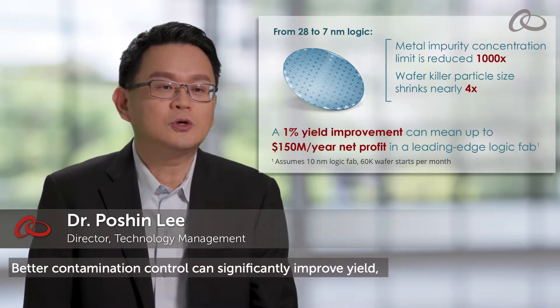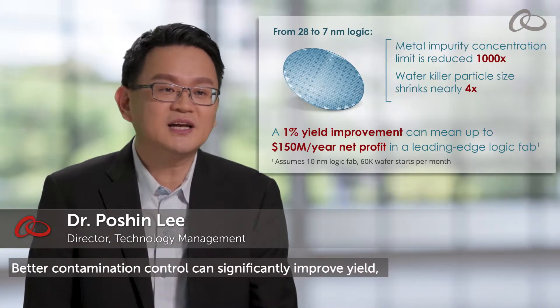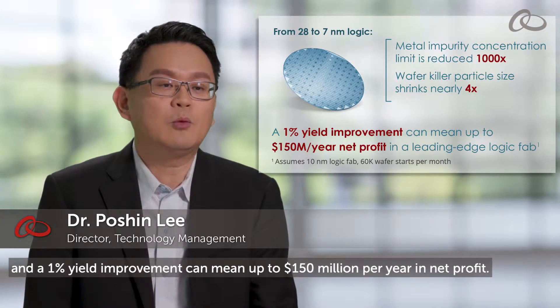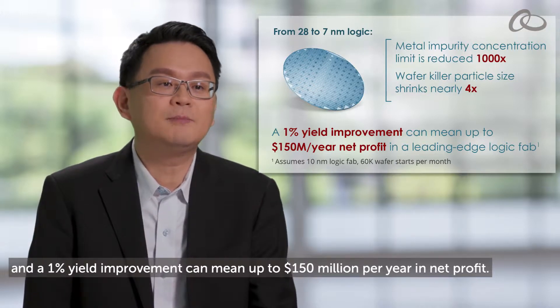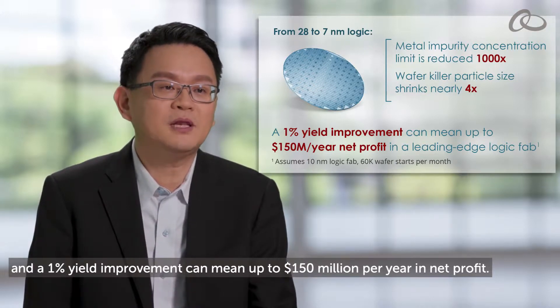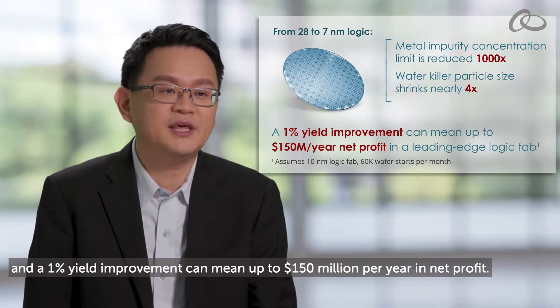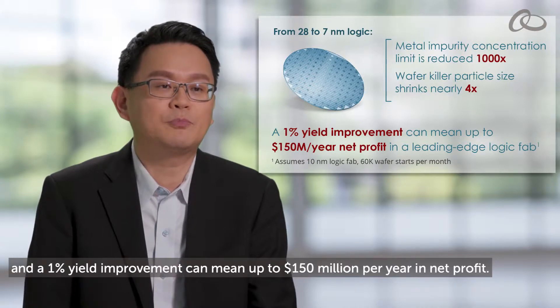Better contamination control can significantly improve yield, and a 1% yield improvement can mean up to $150 million per year in net profit.